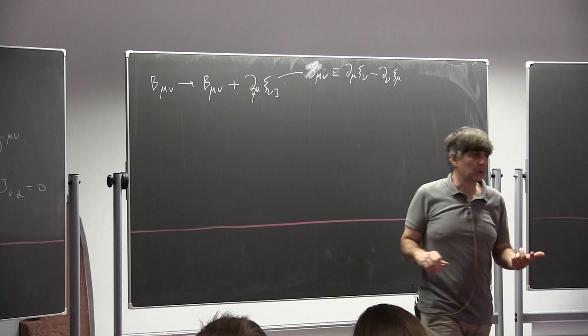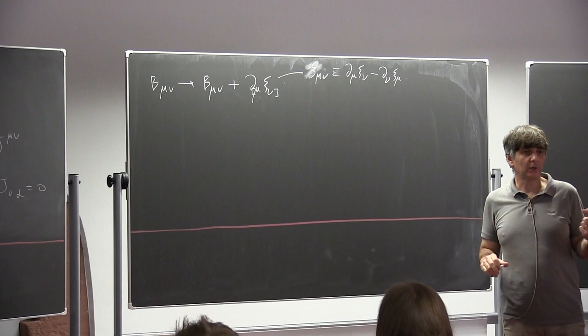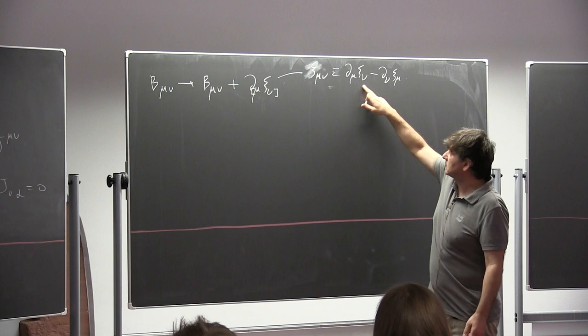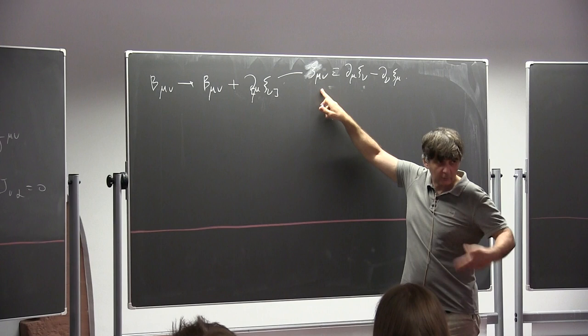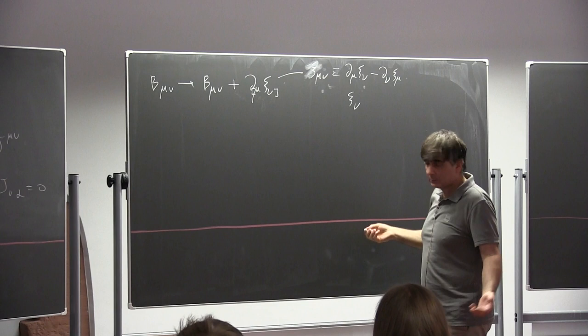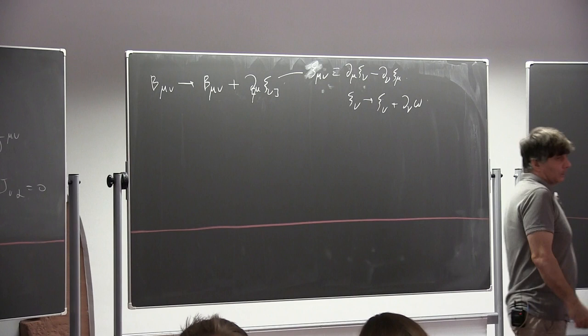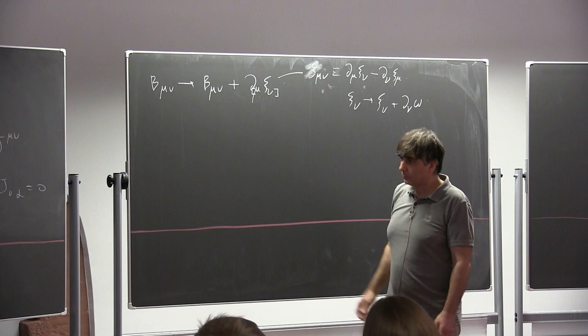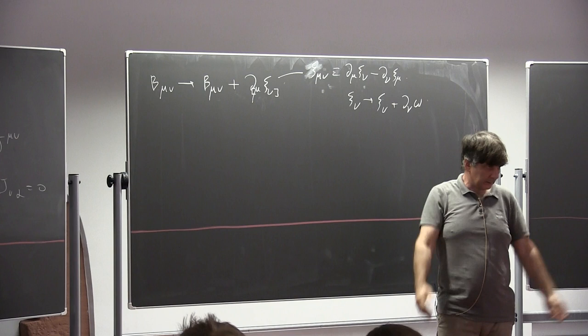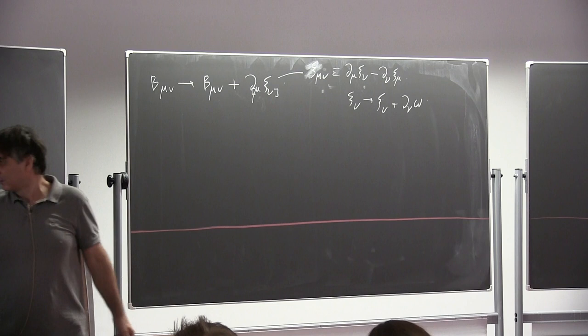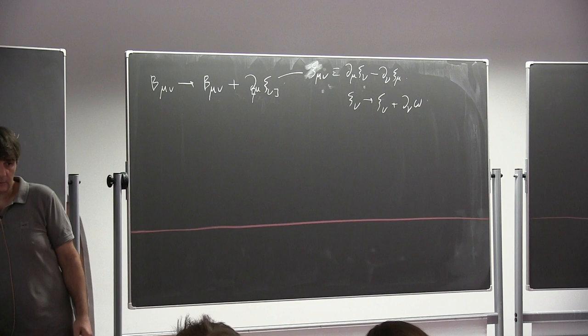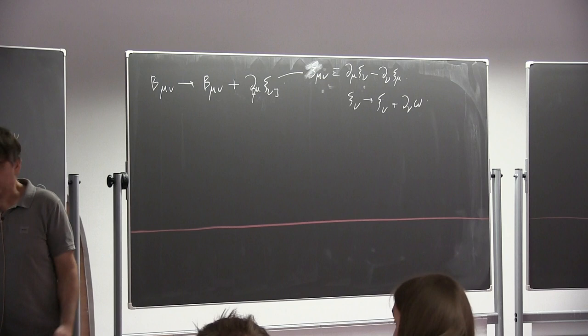You can immediately notice the following: there is a story with the redundancy of the redundancy, because since ξ enters through its field strength — an analog of the Maxwell field strength — ξ itself can be shifted by a derivative of a scalar, and this shift is not reflected on B_μν. We can now repeat literally what we did with Maxwell: we want to make the equation nicely invertible by fixing the gauge to see how many degrees of freedom there are.